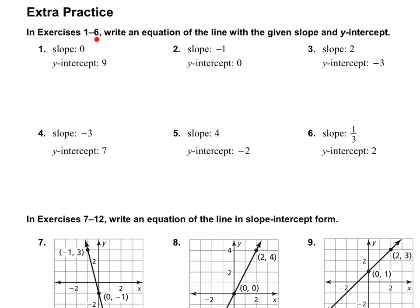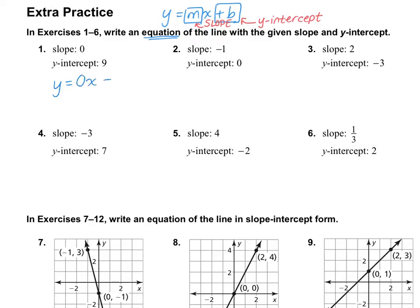In Exercises 1 through 6, write an equation of the line with the given slope and y-intercept. Remember, the slope-intercept form of this equation is y equals mx plus b, where m is your slope and b is your y-intercept. On number 1, the slope is 0 and the y-intercept is 9, so we plug those in: y equals 0x plus 9. Since anything times 0 is 0, we simplify to y equals 9.